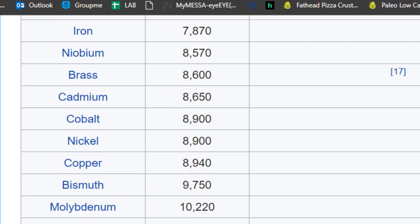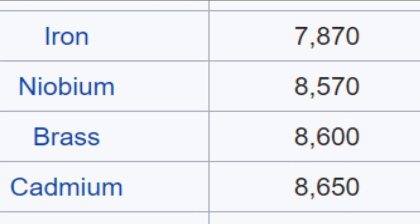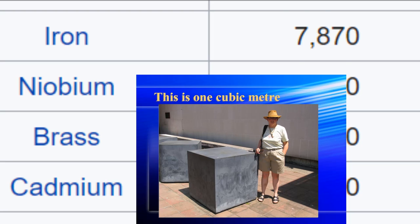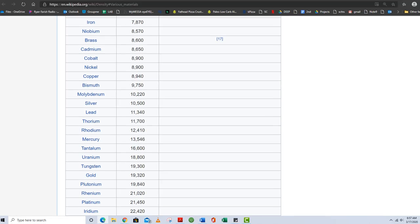Scrolling through this table, we see iron. If I had one cubic meter of iron, its mass would be 7,870 kilograms. Or again, the density of iron is 7,870 kilograms per cubic meter.